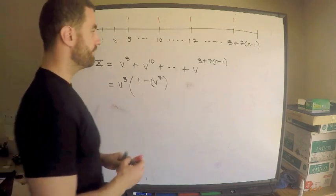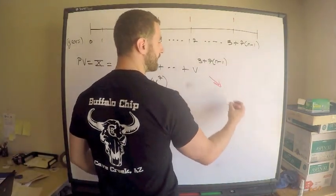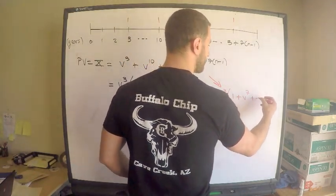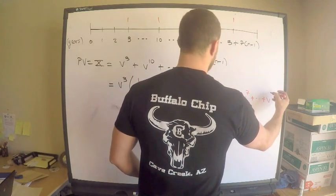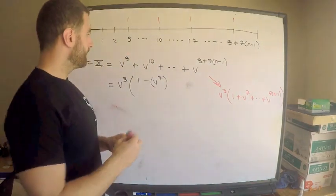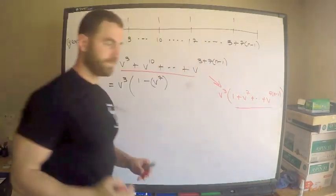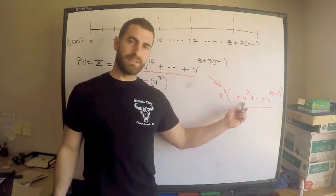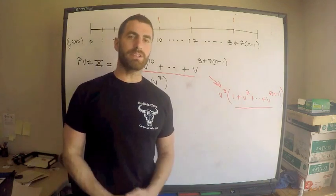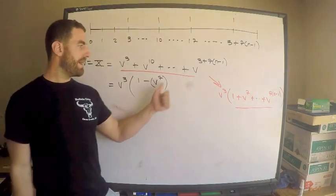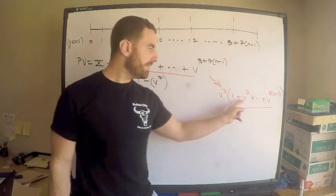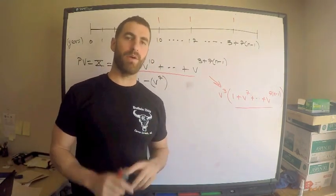So this is one minus v, the common ratio. I need to take the common ratio to some power. This power indicates how many terms of the finite geometric series there are. How many terms are there? I've gone through an argument like this with you before. Let me write this one other way just to illustrate. This is v cubed times one plus v to the seven plus dot dot plus v to the 7n minus 1.